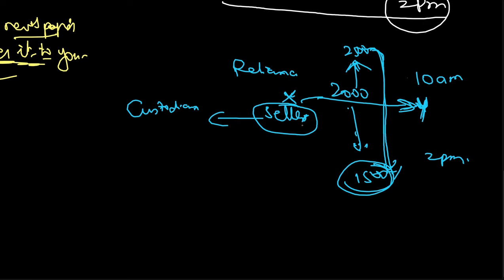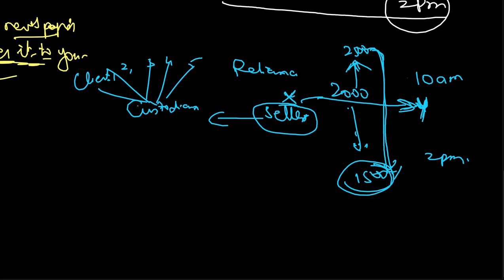He will enter into an agreement with the custodian. A custodian is an entity which safeguards investors' financial assets. In India we call these depository participants — most big brokers also take this license and act as custodians, as do investment banks. In the UK and US it is more popular as custodian investment banks. This custodian holds the assets of many clients, and some of those clients hold Reliance on a long-term basis.